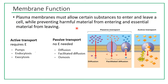The plasma membrane must allow certain substances to enter and leave a cell while preventing harmful material from entering and essential material from leaving. When material moves in and out of a cell, we call it transport. There are two major types of transport. Active transport requires specific energy — the energy of ATP — to transport material into or out of a cell.